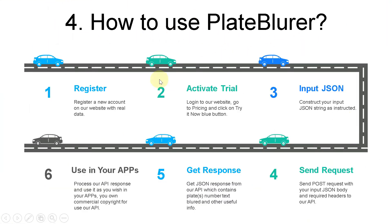How to use Plate Blurrer: First, register a new account on our website with real data. Then activate the trial — log in to our website, go to pricing, and click the blue 'Try It Now' button. Next, construct your input JSON string as instructed, and send a POST request with your input JSON body and required headers to our API. Finally, get the JSON response from our API containing plate number text blurred and other useful info, then process and use it as you wish in your apps. You own commercial copyright for using our API.